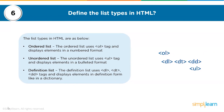The sixth question: define the types of lists in HTML. There are three types: ordered list, unordered list, and definition list. The ordered list uses the ol tag and displays elements in a numbered format. The unordered list uses the ul tag and displays elements in a bulleted format. The definition list uses dl, dt, and dd tags and displays elements in the form of definitions, like a dictionary.